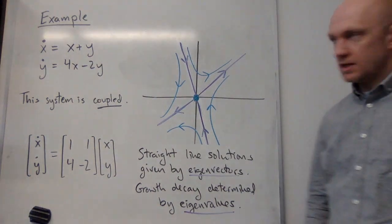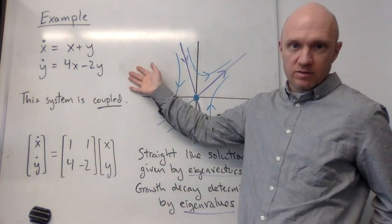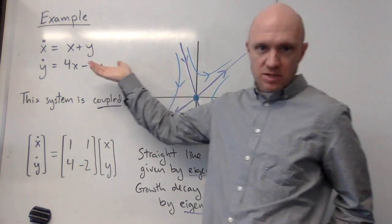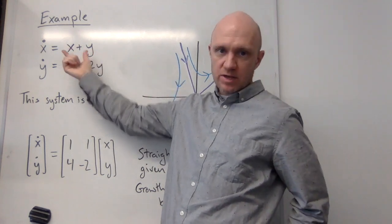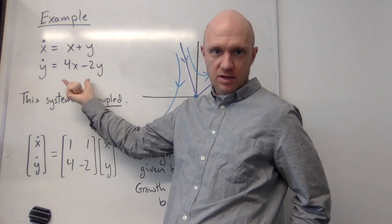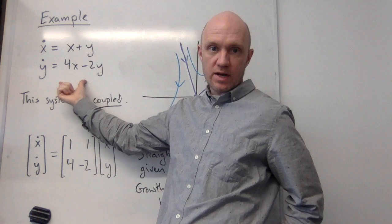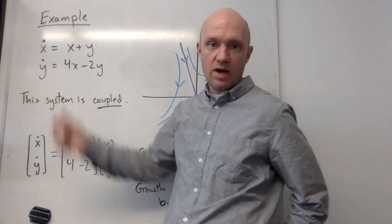All right, you ready for this? Let's look at an example of a linear system which is coupled. So going back to my original template, I can have any old linear combination of x and y in the definitions of x dot and y dot. This time I'm going to take x dot equals x plus y and y dot equals 4x minus 2y.